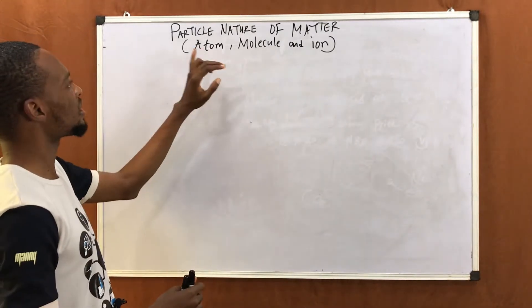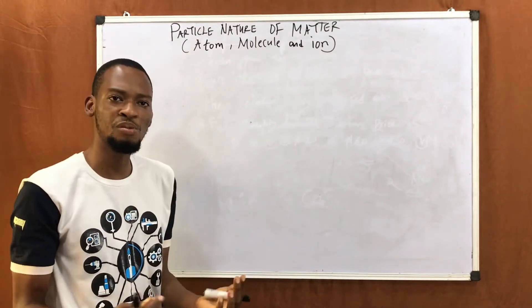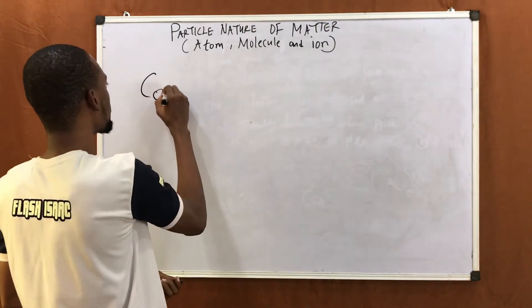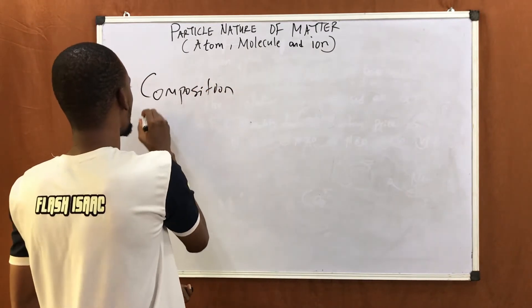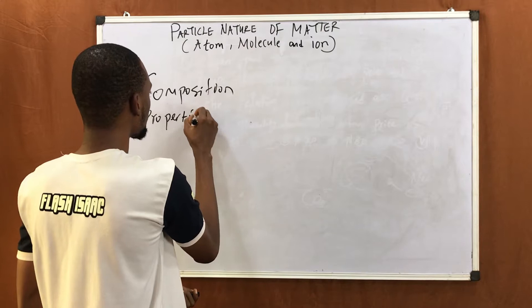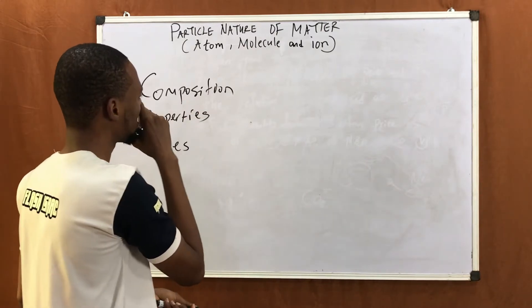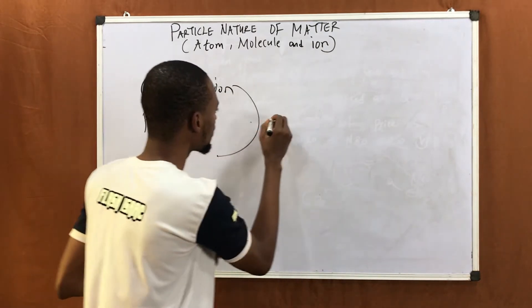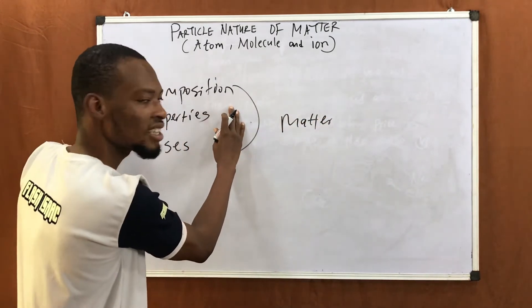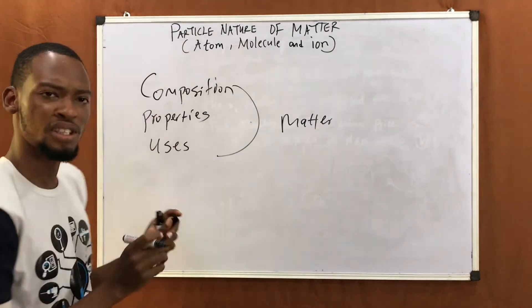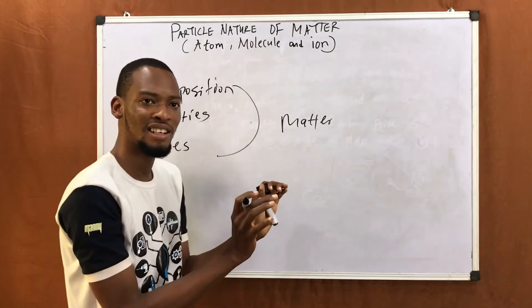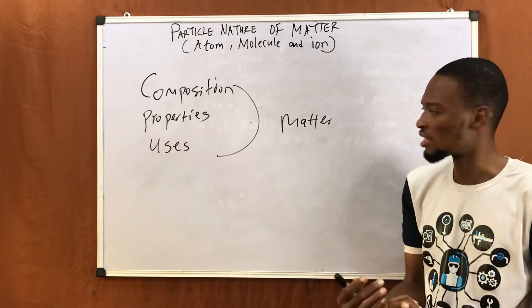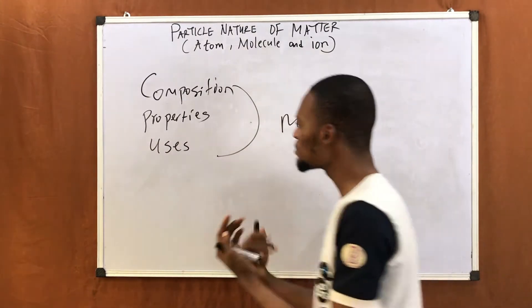Today I will be taking you to the particle nature of matter. Now we know that chemistry is the study of the composition, properties and uses of matter. So matter is composed of something, it has properties and it has uses. Matter is not useless — it is composed of certain things, and those things that make up matter have properties. This is what chemistry talks about.